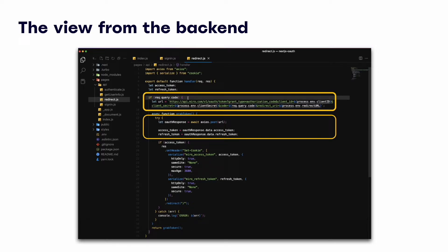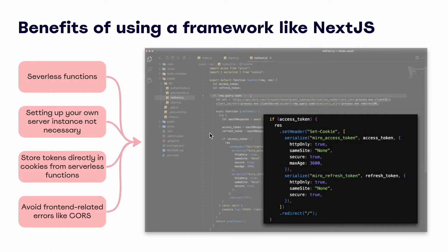Let's take a moment to call out some of the benefits of using a framework like Next.js, which provides serverless functions and saves us time by removing the need for setting up a formal server. These functions allow us to make API requests directly from .js files within our app. In contrast, if we were using a framework like React, we would want to leverage an Express server or something similar. Next.js serverless functions also allow us to more seamlessly save our OAuth access token directly in the cookies without passing them between back-end and front-end, and this setup helps us avoid CORS errors.